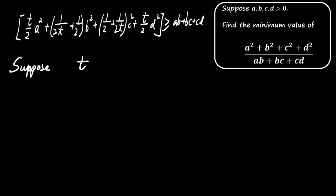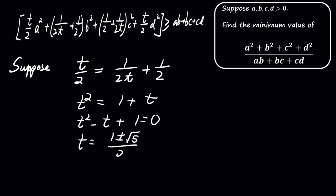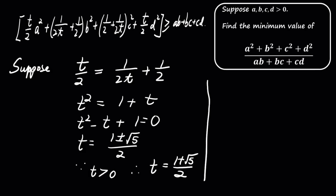Suppose t over 2 equals 1 over 2t plus 1 over 2. Solving this equation gives us t equals 1 plus or minus the square root of 5 divided by 2. Since t is greater than 0, we take the positive root, giving us t equals 1 plus the square root of 5 divided by 2.